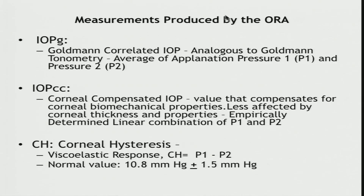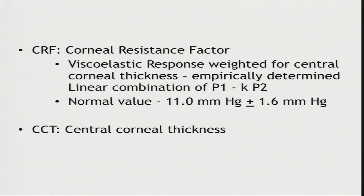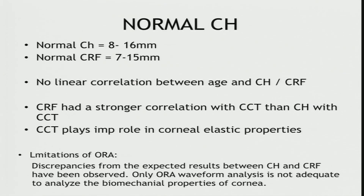Other parameters which can be derived include IOPG, which is a Goldmann-correlated applanation, and cornea-compensated IOP. Corneal hysteresis normal value is supposed to be 10.8 mmHg. The corneal resistance factor is another derived parameter which is the viscoelastic response weighted for the central corneal thickness. Normal hysteresis is 8 to 16 mmHg, and resistance factor is 7 to 15 mmHg. There is no linear correlation between hysteresis and CRF. CRF has a stronger correlation with central corneal thickness than corneal hysteresis does.